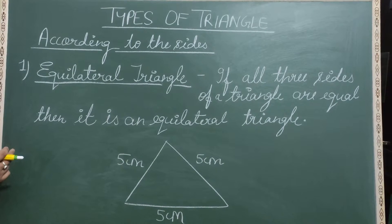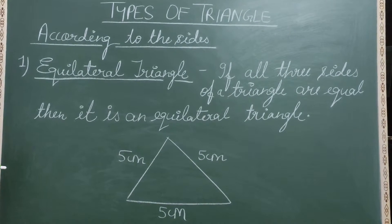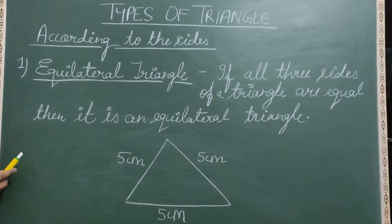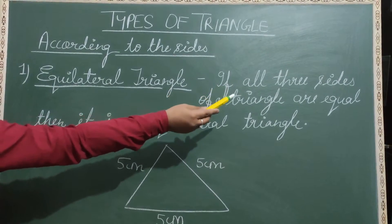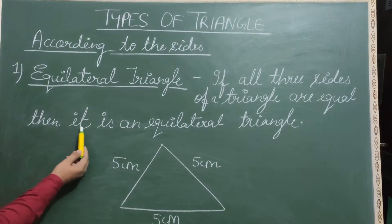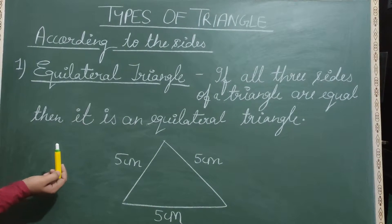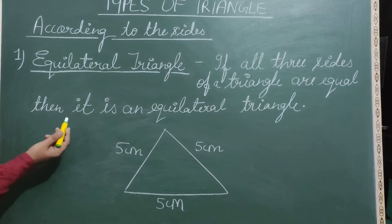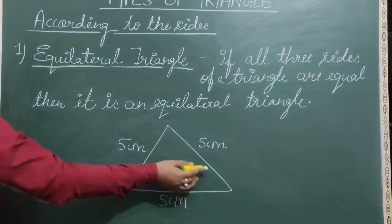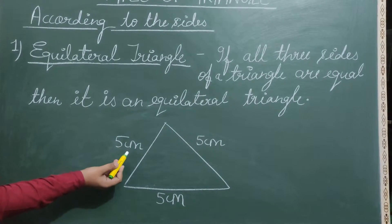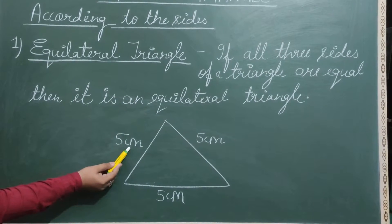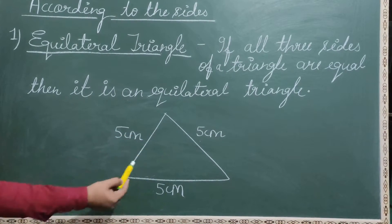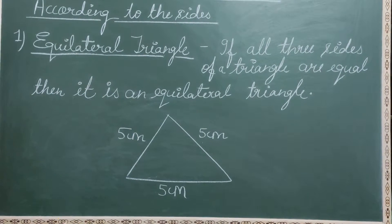Now we have covered the types of triangles according to their sides. The first type is an equilateral triangle. If all three sides of a triangle are equal, then it is an equilateral triangle. A triangle has three sides, and if all three sides are equal — for example, five centimeters, five centimeters, and five centimeters — then it is called an equilateral triangle.